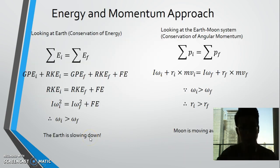This also makes sense from an energy and momentum standpoint. So looking at just the earth, when the earth drags the tidal bulge along with it, it dissipates a lot of energy due to friction. And so that means that the earth's rotation is actually slowing down.